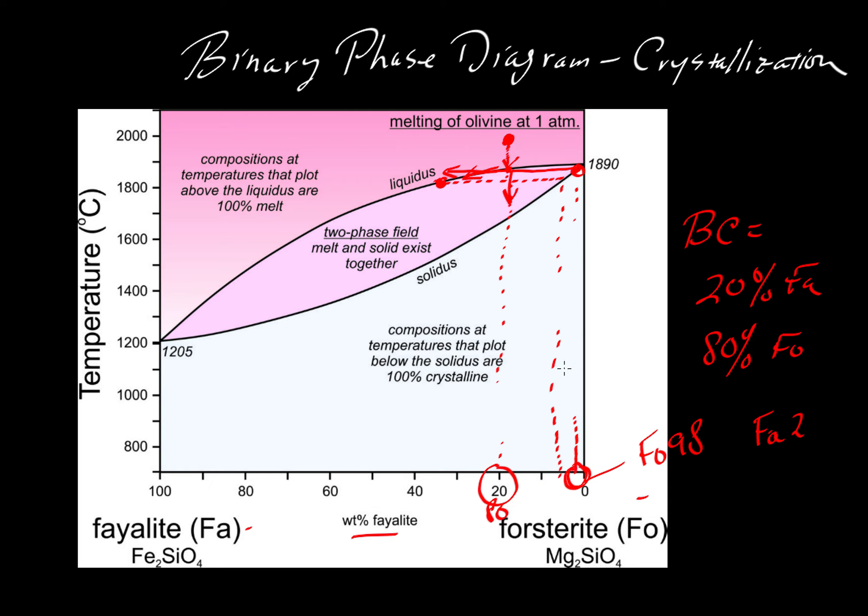I'm not doing a very good job of drawing a perfectly vertical line, but it looks like those new crystals will be closer to FO 95 than FO 98. And then the new liquid that we would have would be somewhere a little bit between fayalite 30 and fayalite 35. Well we can continue having the liquid evolve down this liquidus curve.